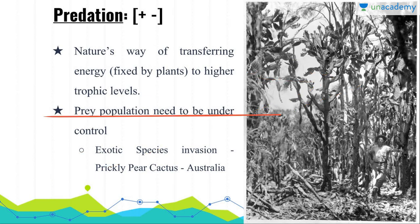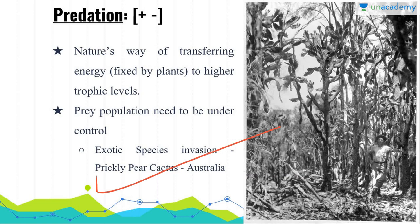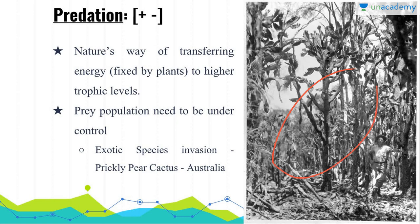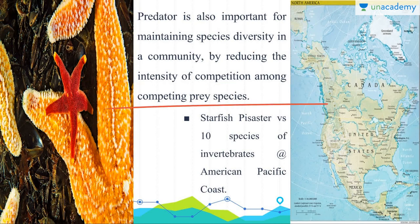The prey population needs to be controlled effectively. In 1920 in Australia, when prickly pear cactus was introduced without its natural predator, it spread over a very large area in a very short time. Later, the natural predator from South America — a kind of moth — was introduced, and the population of prickly pear cactus got controlled.